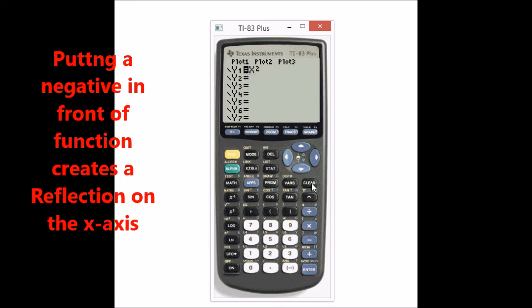This is called a reflection on the x-axis. Notice all you have to do is put a negative in front of your function, your original function. And it will make any function shift across the x-axis.